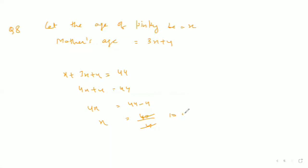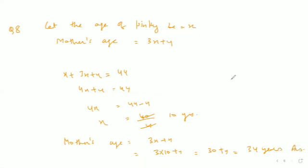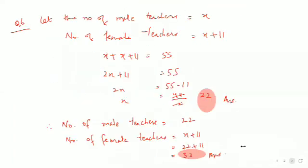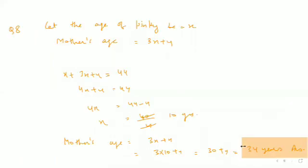So Pinky's present age is 10 years. We have been asked to find mother's age, which equals 3x plus 4, meaning 3 into 10 plus 4, that is 30 plus 4, which is 34 years. This is our answer. So that was all from question number 5 to question number 8 of exercise 7.3, chapter linear equations. If you like my videos or find them helpful, please subscribe to my channel, hit the like button, and share the videos. Thank you so much.